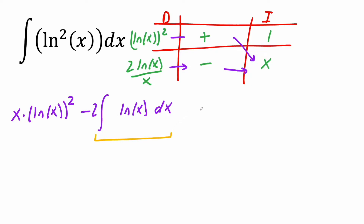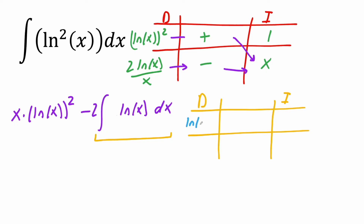In the new table, I'm putting ln(x) in the derivative column and 1 in the integral column. This alternates positive, negative, positive, negative. The derivative of ln(x) is 1/x, and the integral of 1 gives us x.